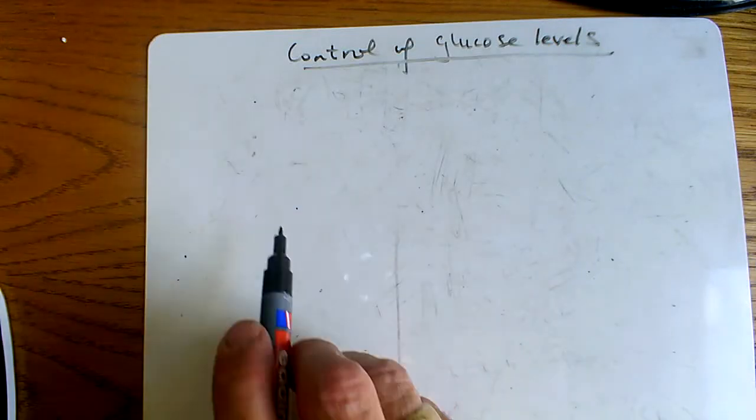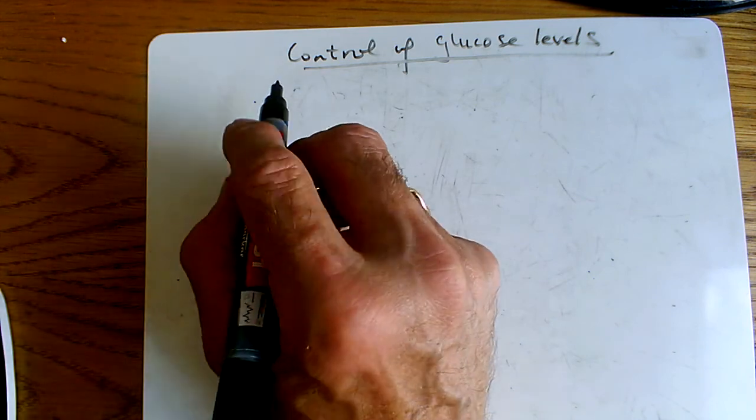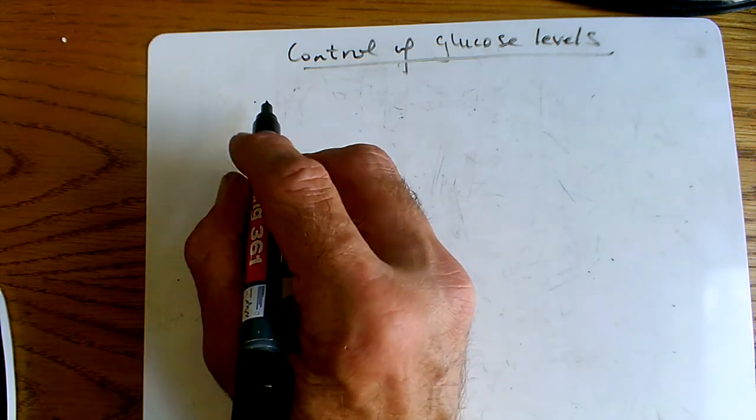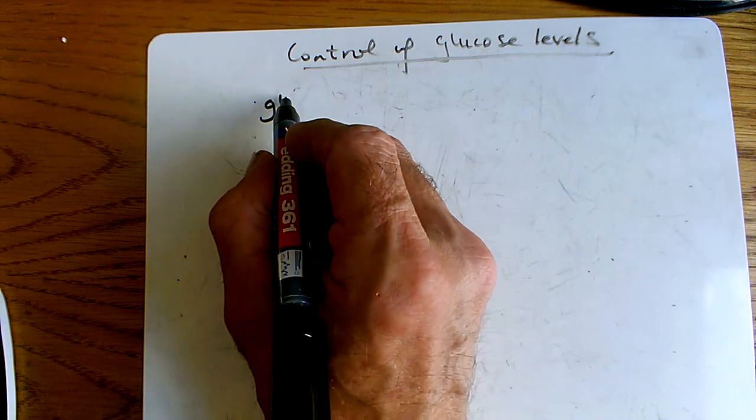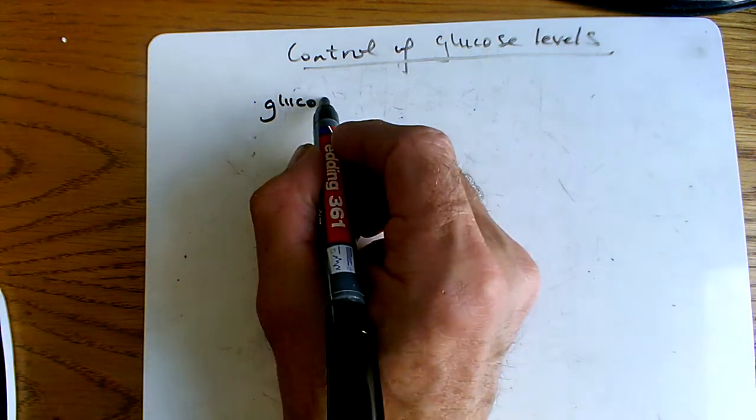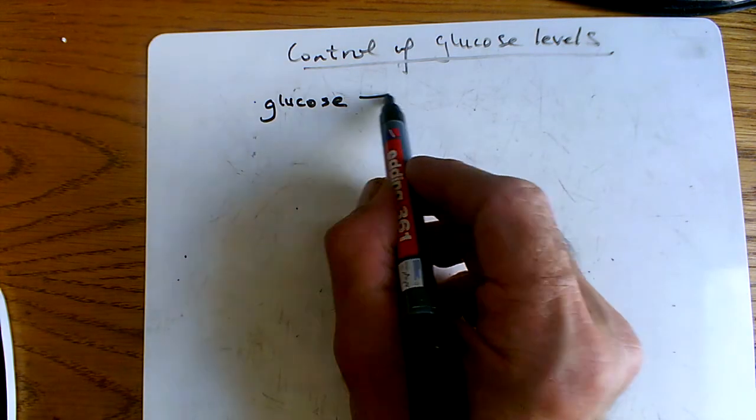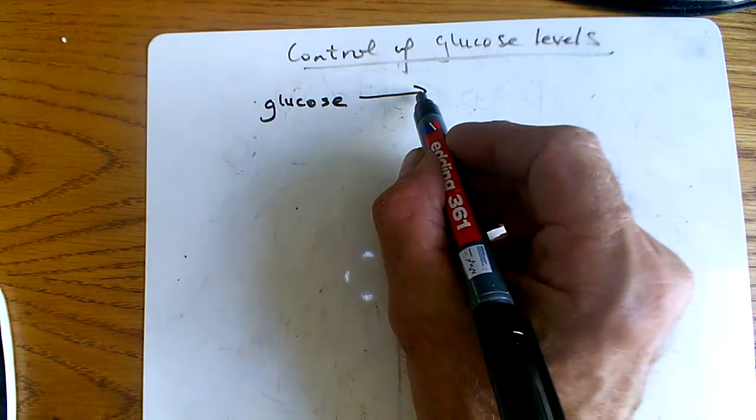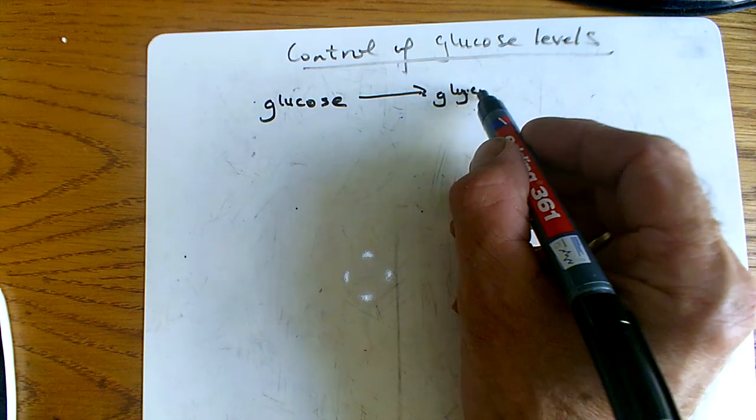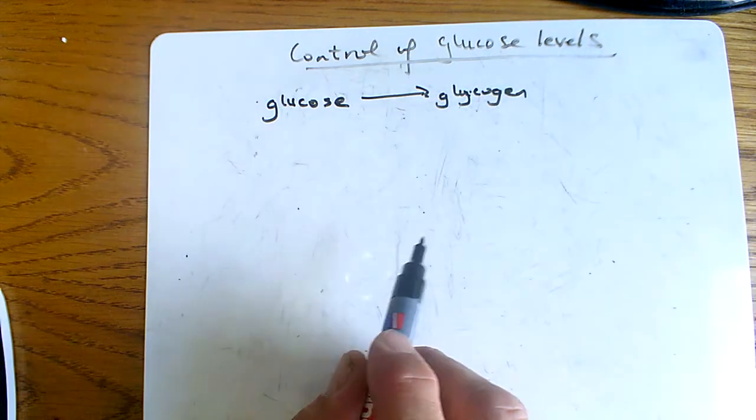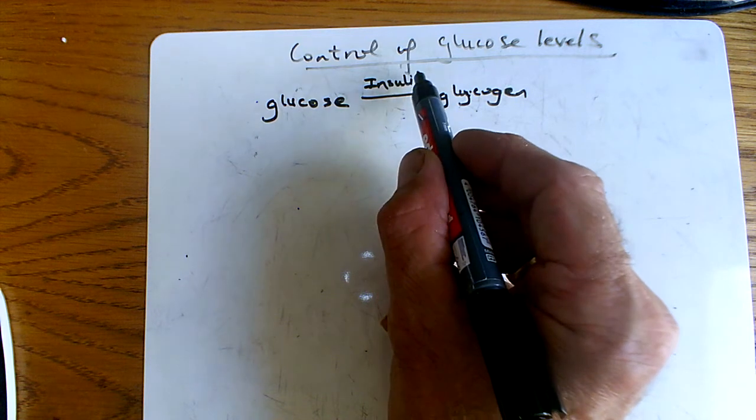Hi everybody, we're going to look in this lesson at control of glucose levels. So we have glucose, and it can be converted to a storage compound called glycogen, and that is done by a hormone called insulin.